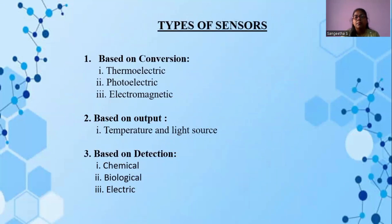Types of sensors. Based on conversion, the sensors are classified into three types: thermoelectric sensors, photoelectric sensors and electromagnetic sensors. Based on input, temperature and light source sensors. Based on detection, the sensors are classified into three types: chemical sensors, biological sensors and electric sensors.